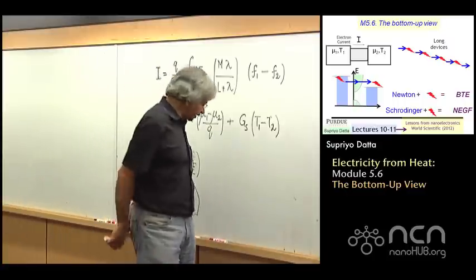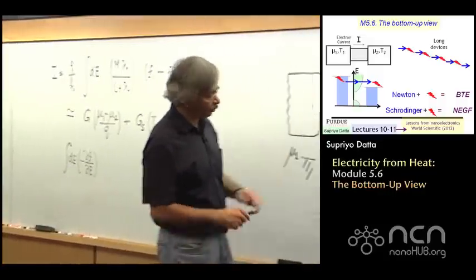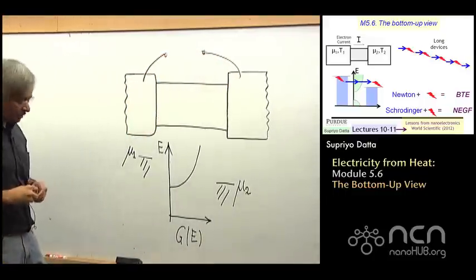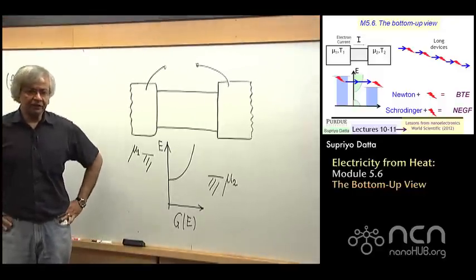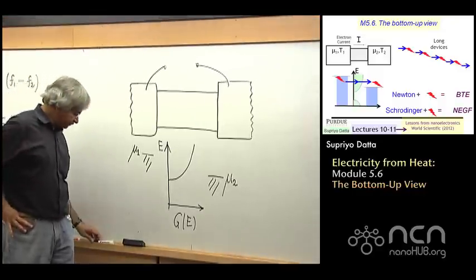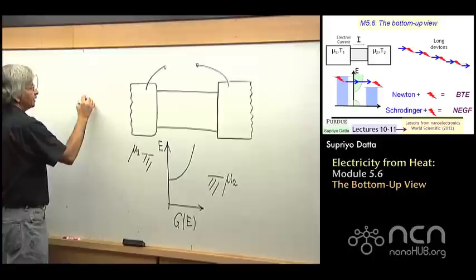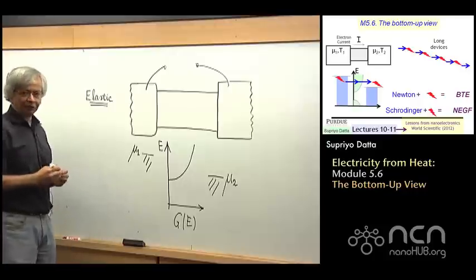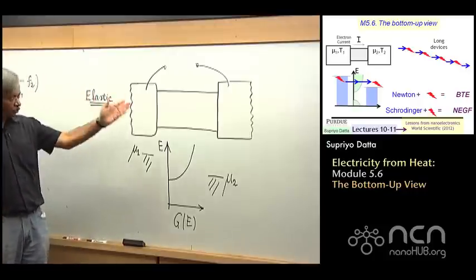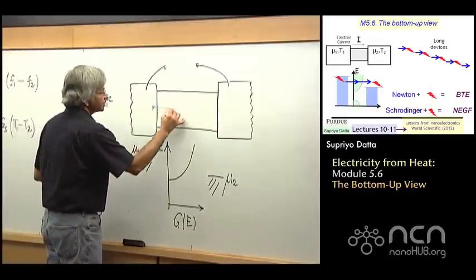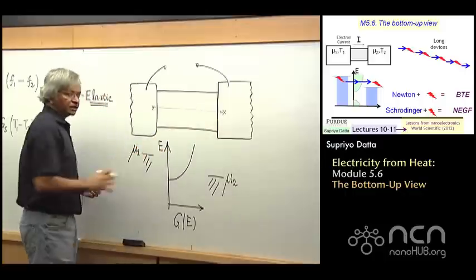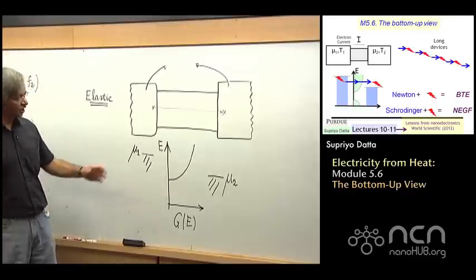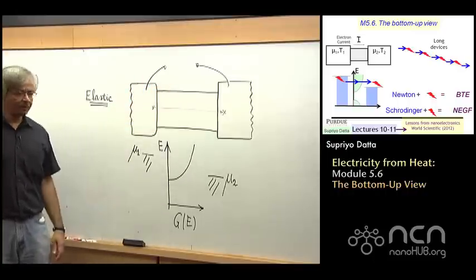The basic thing that we have been discussing is this current flow through a device. One of the important points I made earlier is the whole idea of an elastic resistor. If you assume that your channel is elastic, and that is a technical word in this context, it's used to mean that when an electron goes through the thing from one side to another, it does not exchange energy with the surroundings. When you have an elastic resistor, all the heat, all the energy exchange takes place in the contacts.